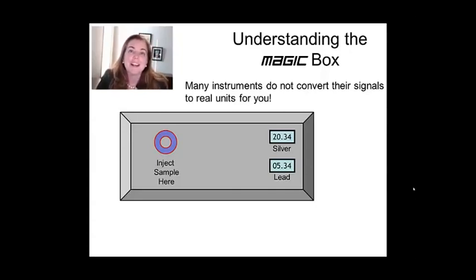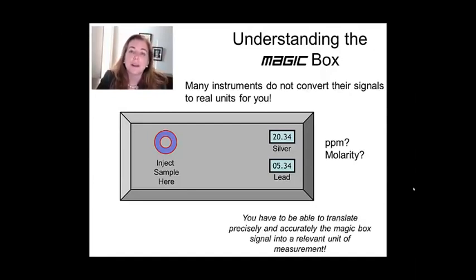So for example, in this magic box, we're given two numbers, but we don't actually know the units. So is it PPM, or is it molarity? How do we take what will be a signal from a spectrometer, which often is a current, might be a voltage—you'll see in chromatography it's a peak area—and how do we make that relevant in units that we actually care about? And that is the process of translation that we have to do in a linear calibration procedure.